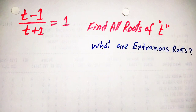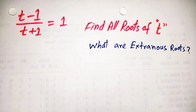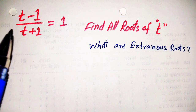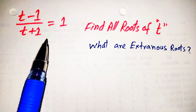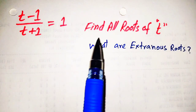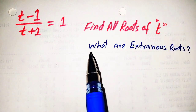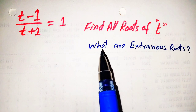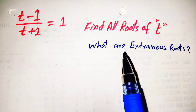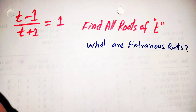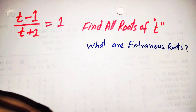Hello guys, welcome to my YouTube channel. Today we are going to solve a very nice algebraic equation: (t minus 1) over (t plus 1) is equal to 1. We have to find the root of t. In this question we will also explain extraneous roots and what they are. We will solve this by two methods.